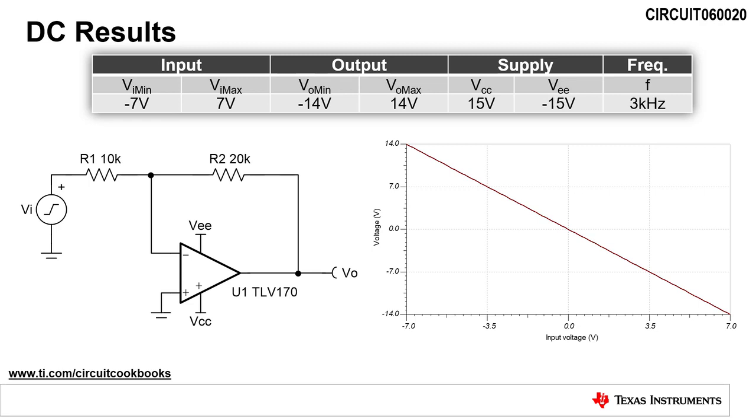A DC sweep of the input voltage from negative 7 volts to 7 volts yields an output voltage from 14 volts to negative 14 volts. This verifies the functionality of the circuit.